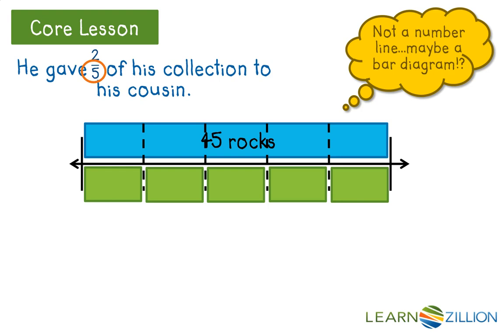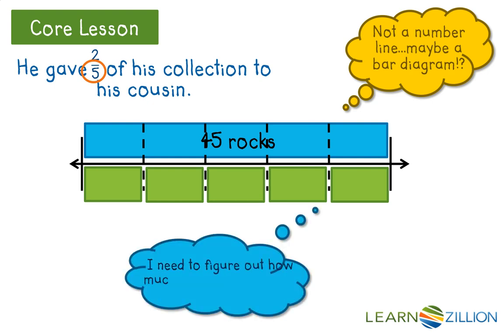This diagram has helped me. Now I see what I have to do. I have to figure out how many rocks are equal to 1 fifth, or 1 box, in my diagram. Whatever number goes in the box has to be the same for each one, and it also needs to total my 45 rocks.